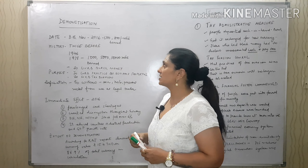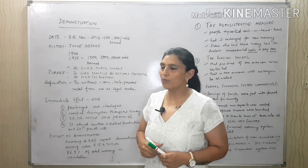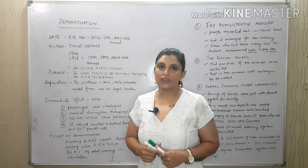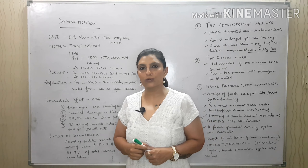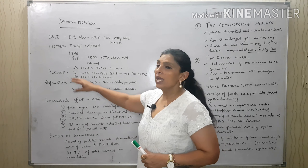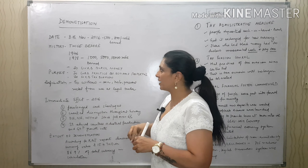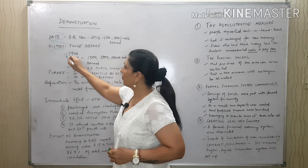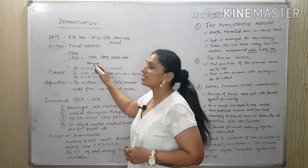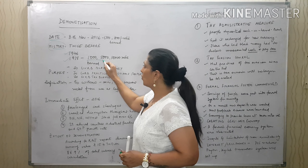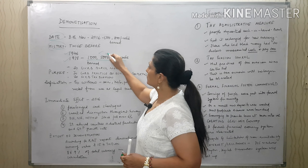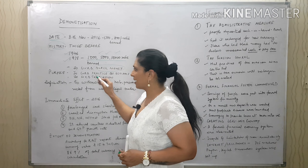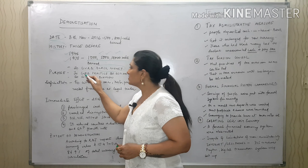Demonetization was initiated on 8th November 2016. The 500 and 1000 currency notes were banned. Instead, new notes of 500 and 2000 were introduced. It had happened twice before: once in 1946, and once in 1978 under the Janta Government, when notes of 1000, 5000, and 10,000 were banned.